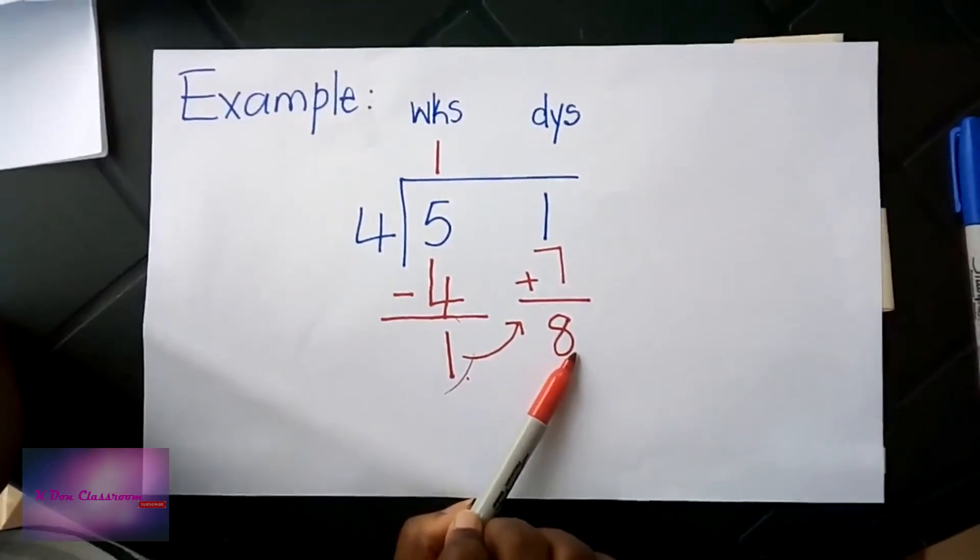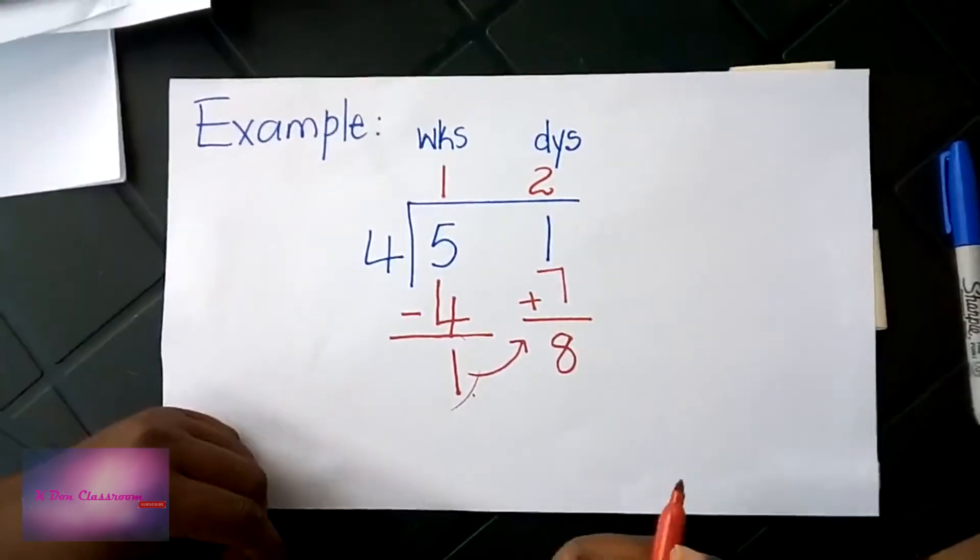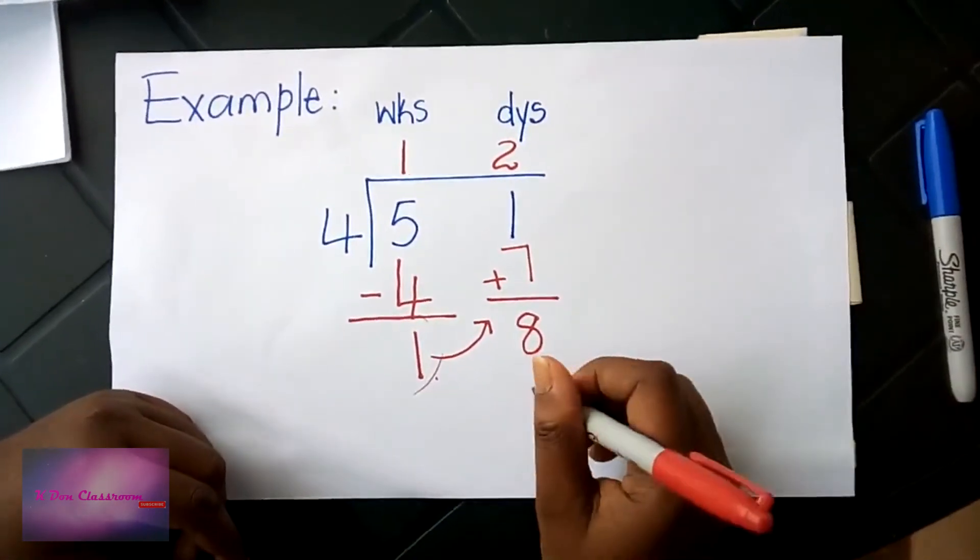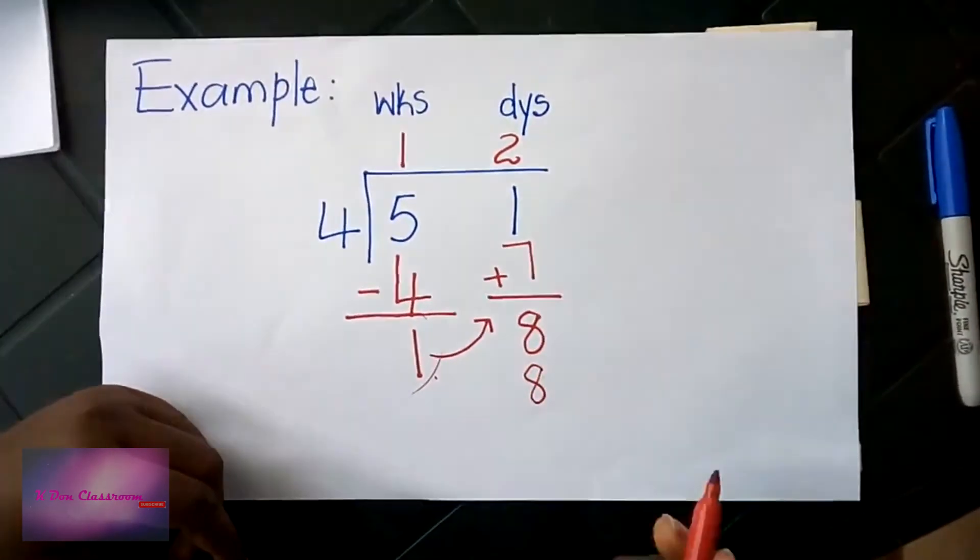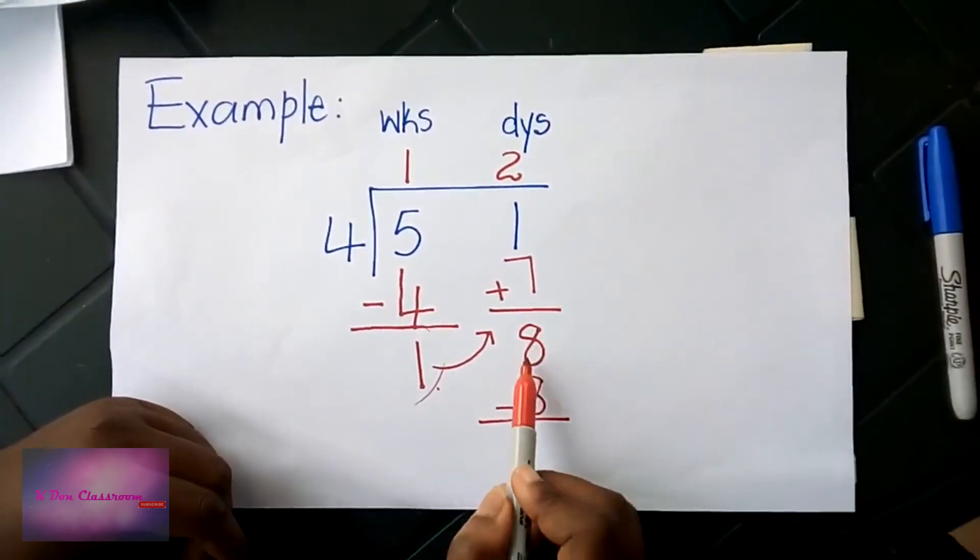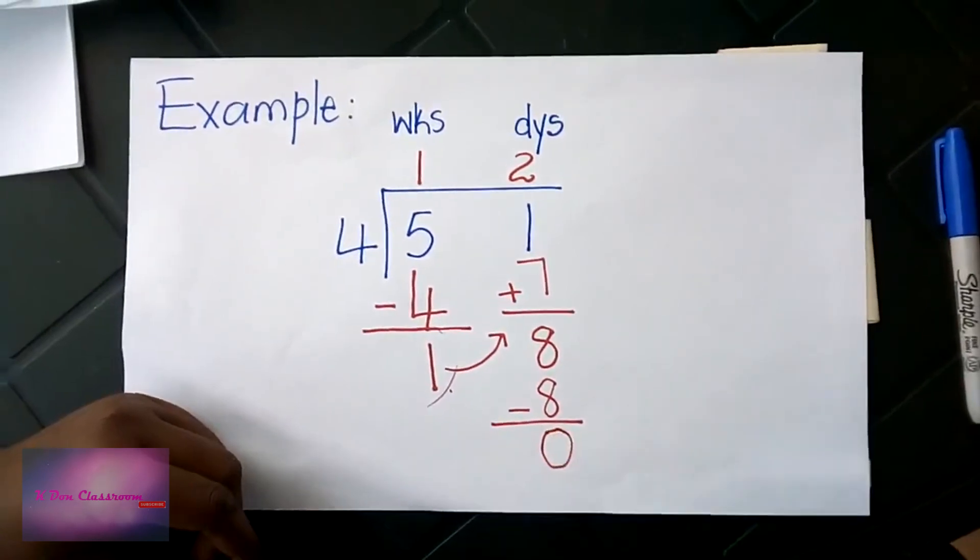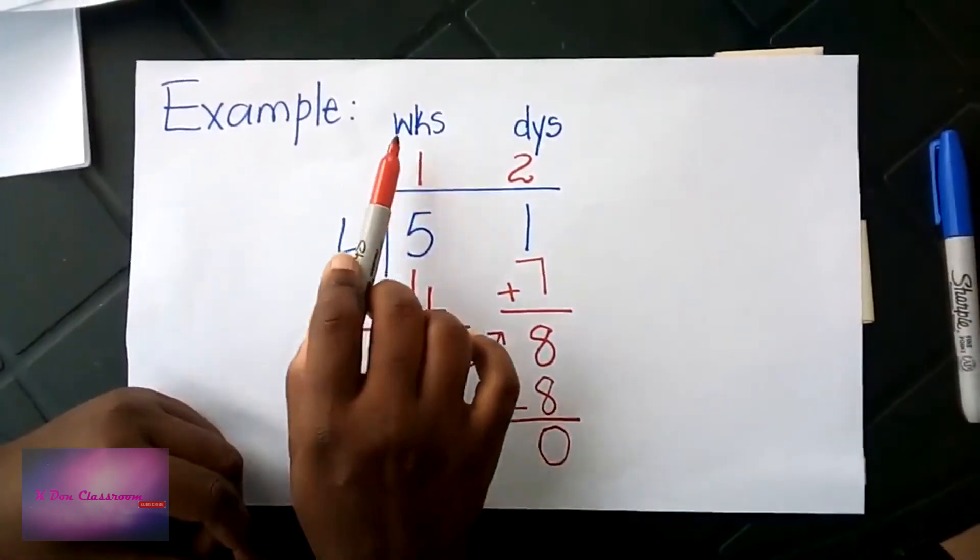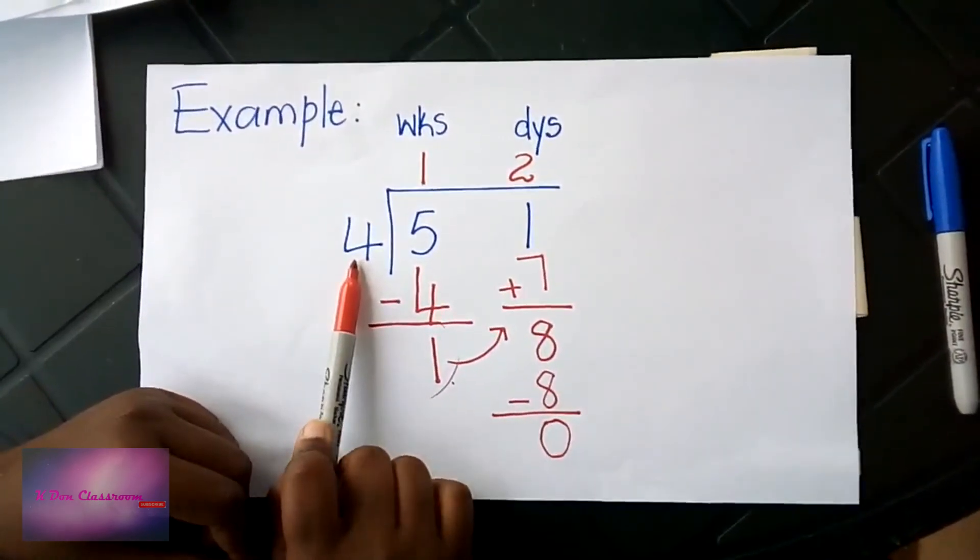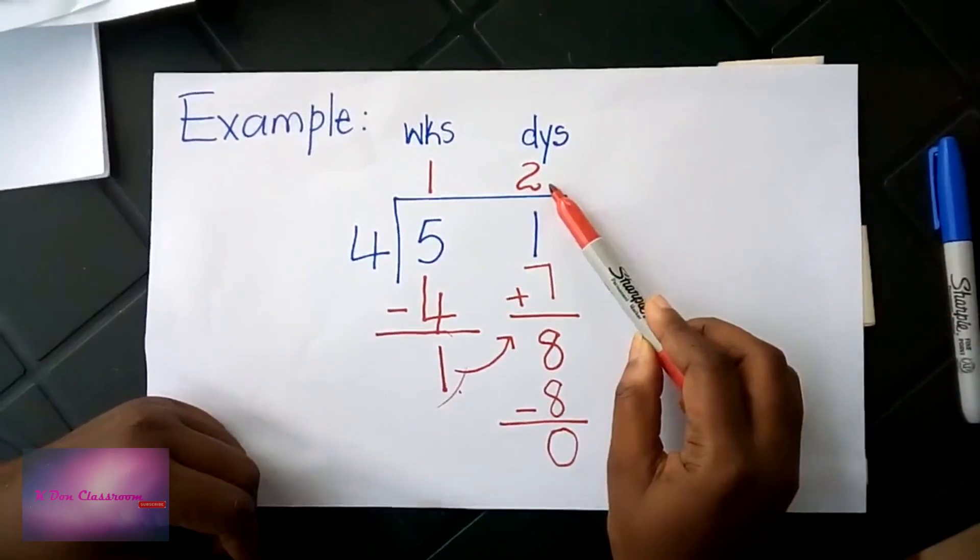Four into eight will give us two. Two times four gives us eight. Eight take away eight, we leave zero. So five weeks and one day divided by four will give us one week and two days.